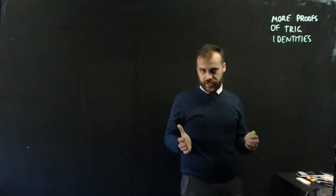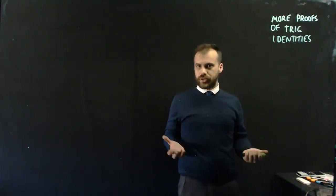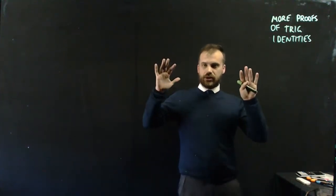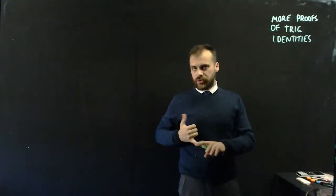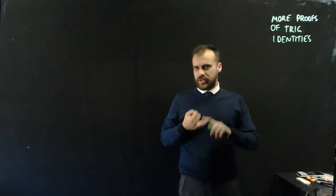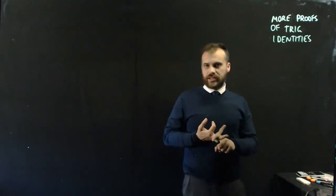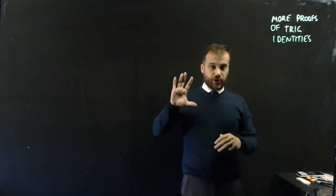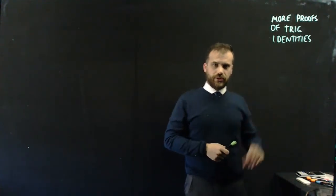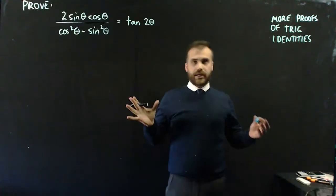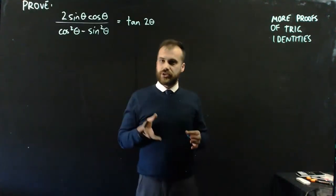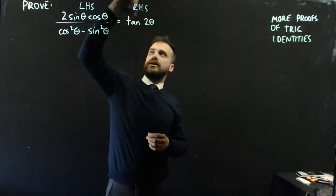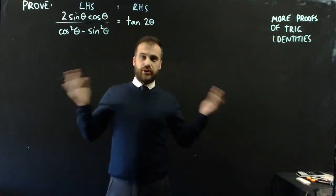I'm going to do some more proofs of trig identities here. There are literally hundreds of trig identities, hundreds of things where you can equate this side to this side and then prove them. You can prove them using the Pythagorean identity, using your angle sum and difference identities, using your double angle identities. The key is just to give it a crack and try to make the left-hand side look like the right-hand side. That's it.